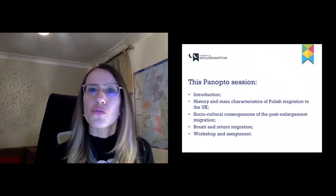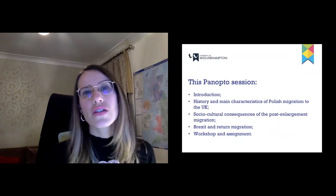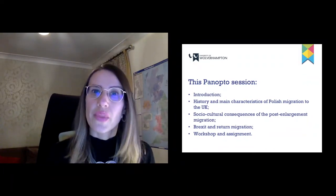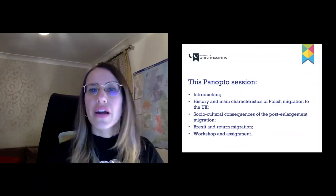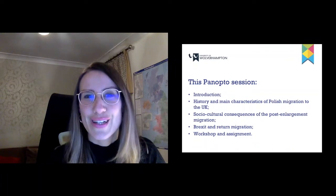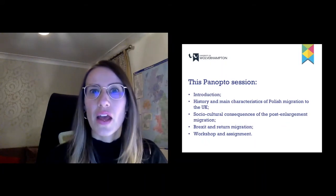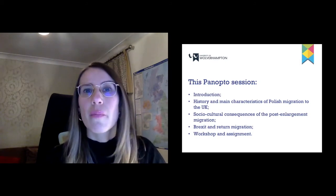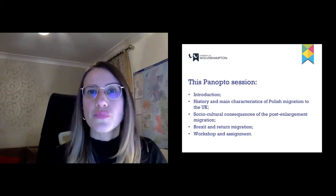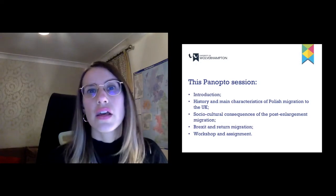This Panopto session will be divided into five different videos to make sure that you can return to a video that you may find more complicated or something that you just need to hear again. The first part is about the introduction to the topic. The second part will be about the history and main characteristics of Polish migration to the UK. The third part will be about the social and cultural change occurring as a result of this post-enlargement migration of Polish people to the United Kingdom. The fourth part will be about Brexit — what happened in 2016, the Brexit referendum — and also about the return migration we have been observing for the last 12 years.